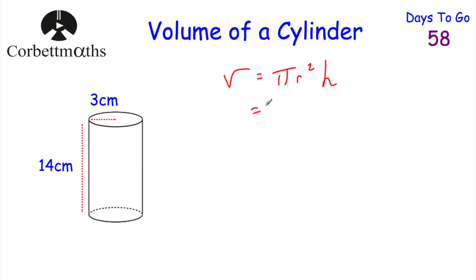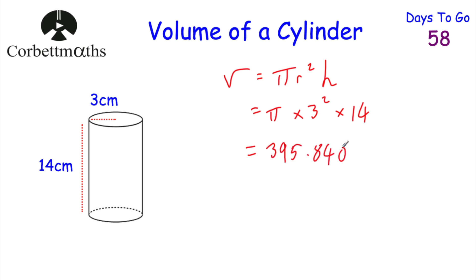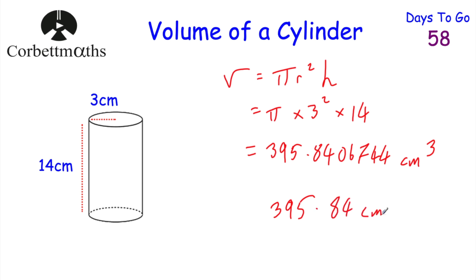To find the volume of this cylinder, we do π multiplied by the radius squared. The radius is 3, so it's π × 3² × 14. That gives π × 9 × 14 = 126π, or as a decimal, approximately 395.84 centimetres cubed to two decimal places.